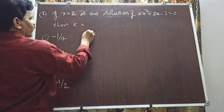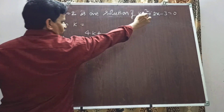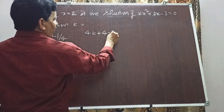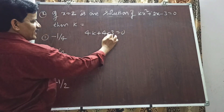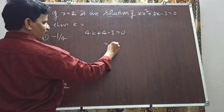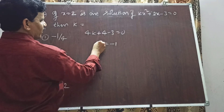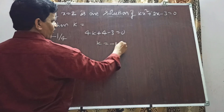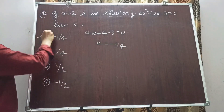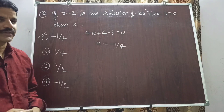Substituting: k×4 + 4 - 3 = 0, so 4k + 1 = 0, which gives 4k = -1, therefore k = -1/4. Option 1, k = -1/4, is the right answer.